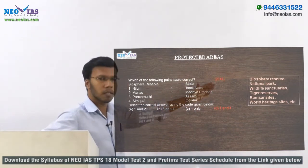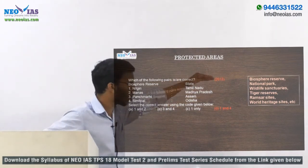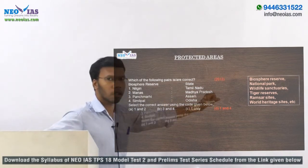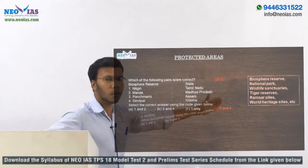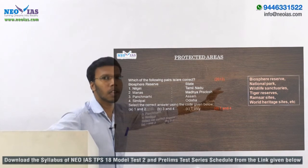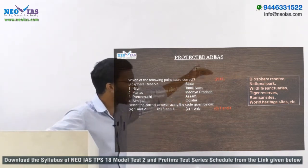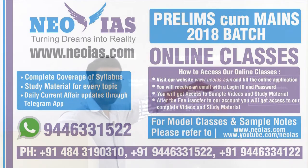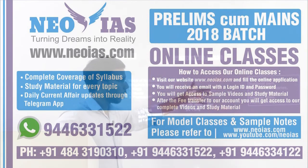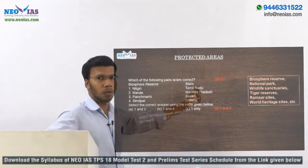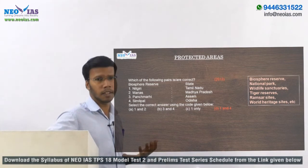The main protected areas to study are: Biosphere Reserves, National Parks, Wildlife Sanctuaries, Tiger Reserves, Ramsar Sites, World Heritage Sites, and Hotspots. You should know both the concept of each and the main protected areas in India. India has 18 Biosphere Reserves, 103 National Parks, more than 500 Wildlife Sanctuaries, 50 Tiger Reserves, 26 Ramsar Sites, and 7 Natural World Heritage Sites — totaling more than 700 protected areas.